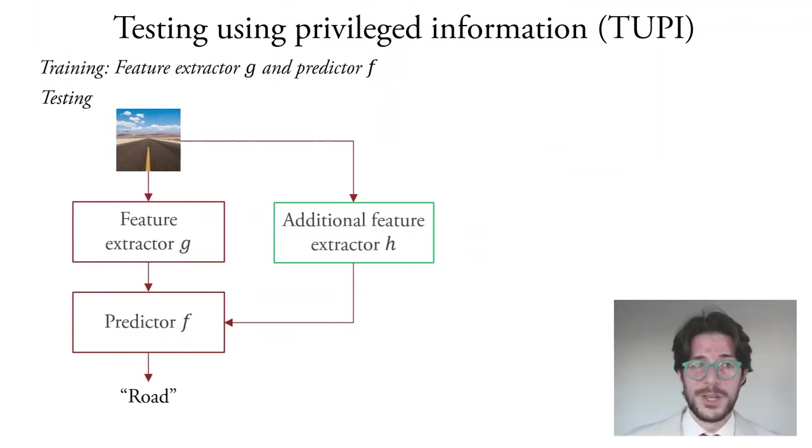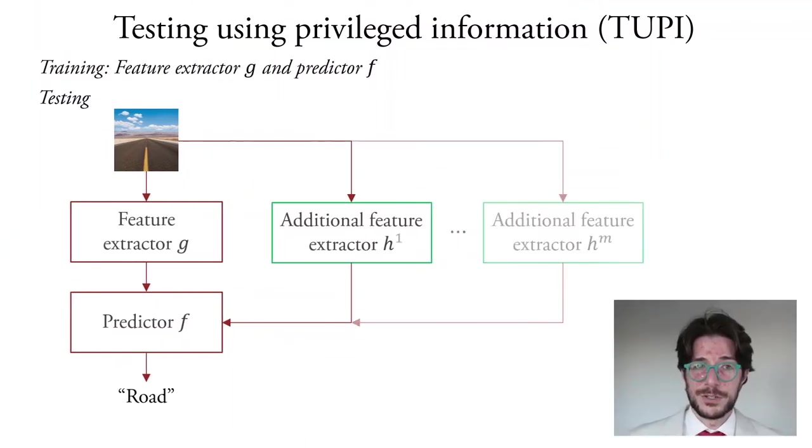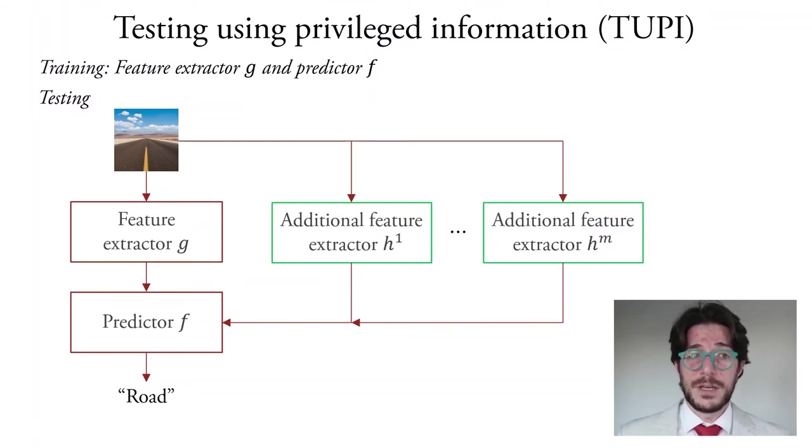Furthermore, we may have m additional privileged test time features. Even though we hope that each is useful, we don't know that they are. Any solution must select which features, if any, are useful without degrading the performance of the predictor F.